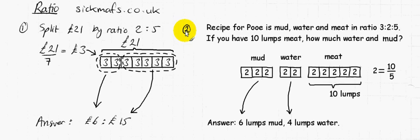Now let's look at ratio from a different angle. We've got a recipe for something, in this case poo, which is made up of mud, water and meat. Not necessarily true, what they say in the questions, you know. And so what this is saying is, 3 parts of the recipe for any quantity of poo is mud, and 2 parts of the recipe for poo is water.